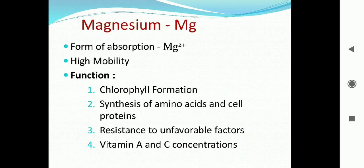The next important macro element is magnesium. Magnesium is absorbed by the plant in the form of Mg²⁺ ions, likewise calcium. Magnesium is a mobile element and moves from one place to another within the plant. Important functions include chlorophyll formation — magnesium is the central molecule of the chlorophyll structure — synthesis of amino acids and cell proteins, and resistance to unfavorable factors.